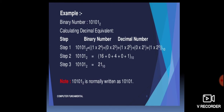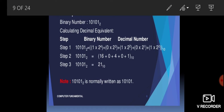Let's convert binary number 10101 to a decimal number. Write the weightage for each position. Starting from the right: 2 raised to the power 0, then 2 raised to the power 1, 2 raised to the power 2, 2 raised to the power 3, and 2 raised to the power 4. The digits are placed on top of their respective positions. Now we multiply: 1 × 2⁴ + 0 × 2³ + 1 × 2² + 0 × 2¹ + 1 × 2⁰.